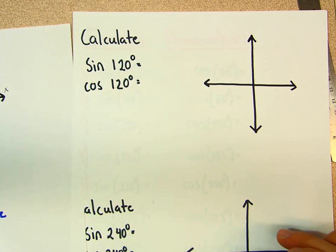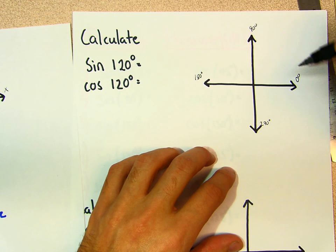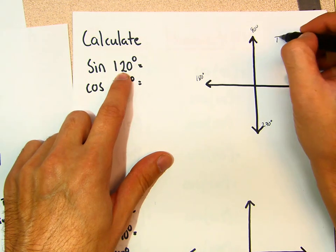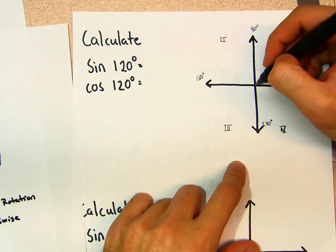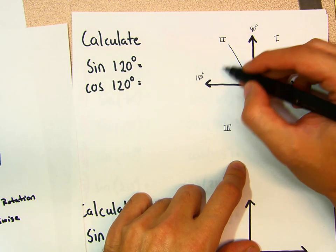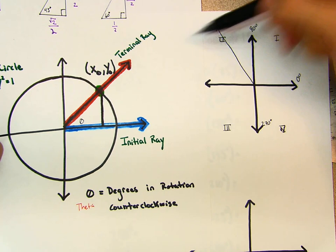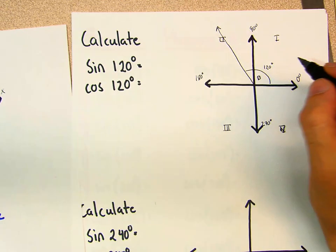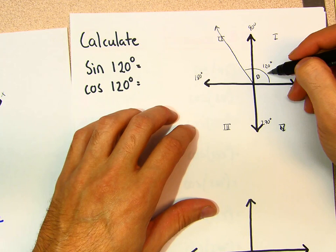Now let's find sine of 120 degrees. Remember: 0° is here, 90° is up, 180° is left, 270° is down. Since 120 is between 90 and 180, we're in Quadrant 2. We start at the initial ray and rotate to the terminal ray at 120 degrees. Theta equals 120 degrees — that's the amount of rotation.